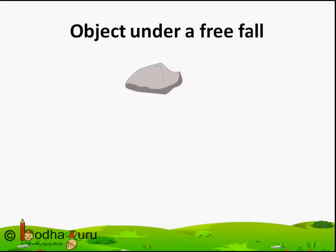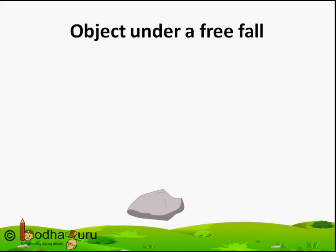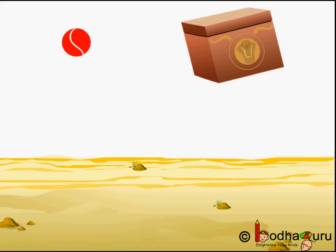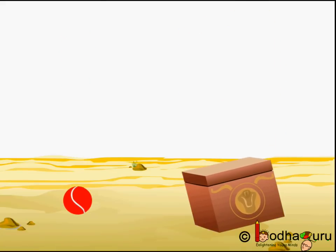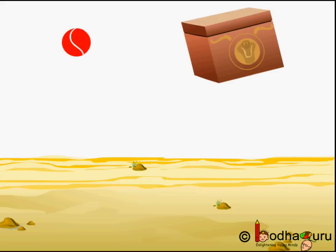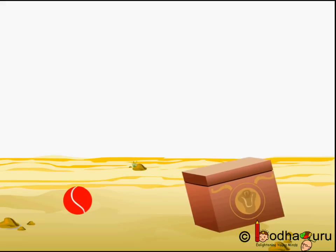When an object falls towards the earth under the gravitational force alone, we say the object is under a free fall. If we drop a small ball and a big box from the third floor, the earth will pull the box more strongly as it is heavier. Does that mean it will fall faster? Do heavy objects really fall faster? Let us see.